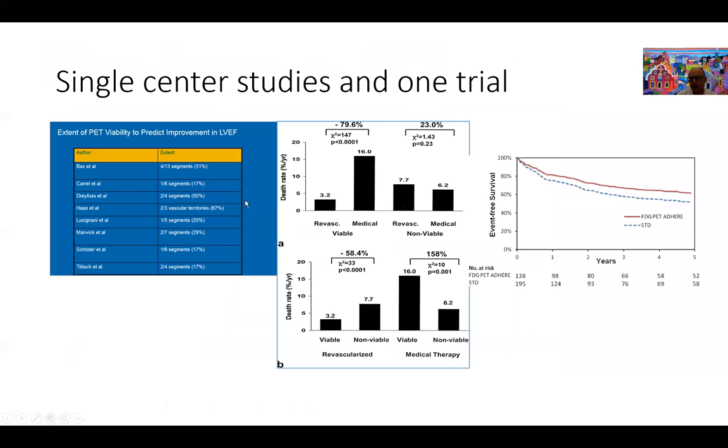This is where all this issue of hibernation assessment comes from. This comes from multiple single center studies with various sample sizes. It comes from the Allman paper looking at revascularizing viable versus non-viable myocardium and the impact of revascularization, which shows if you revascularize viable myocardium, you have lower event rate. If you revascularize dead myocardium, you don't get the benefit but you expose the patient to the risk of revascularization.